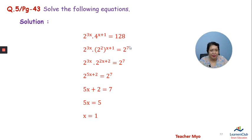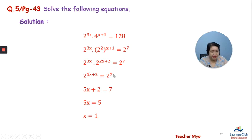By the same way, we draw: 2 power 3x multiplied by 2 power (2x plus 2) equals 7. So 2 power (5x plus 2) equals 7, meaning 5x plus 2 equals 7, and 5x equals 5.